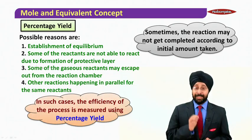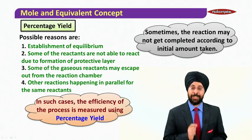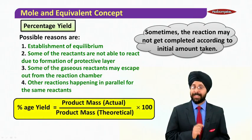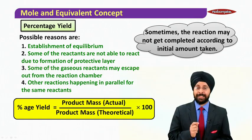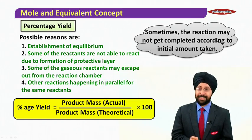Now in such cases, the efficiency of the process is measured using percentage yield. What is percentage yield? It is the product mass that you actually get divided by the product mass that you theoretically predict times 100.